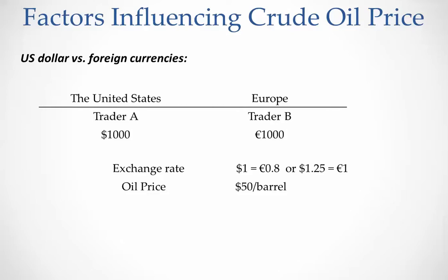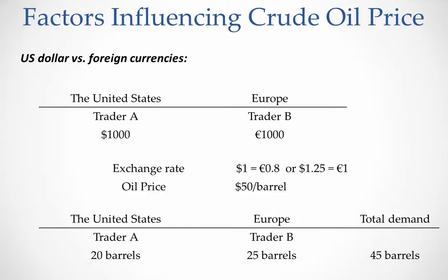Now let's see what happens to trader B. Trader B has 1,000 euros and has to go exchange them for dollars. Because the dollar has lost its value, those 1,000 euros will be converted to $1,250 — since with one euro, trader B gets $1.25. So trader B now has $1,250, which can buy five more contracts, meaning trader B will end up buying 25 barrels of crude oil.